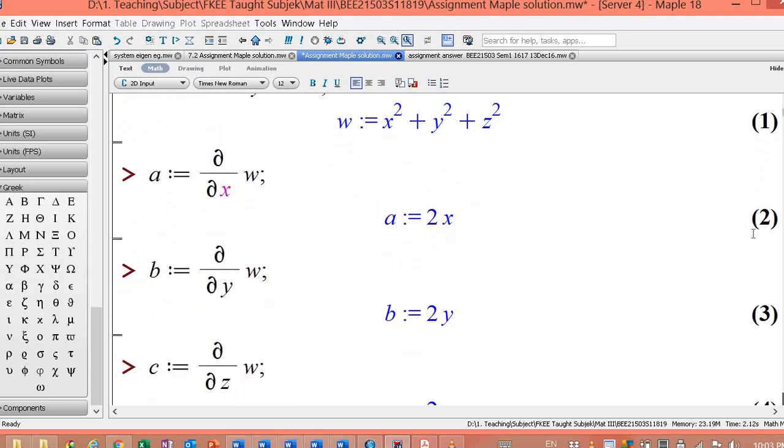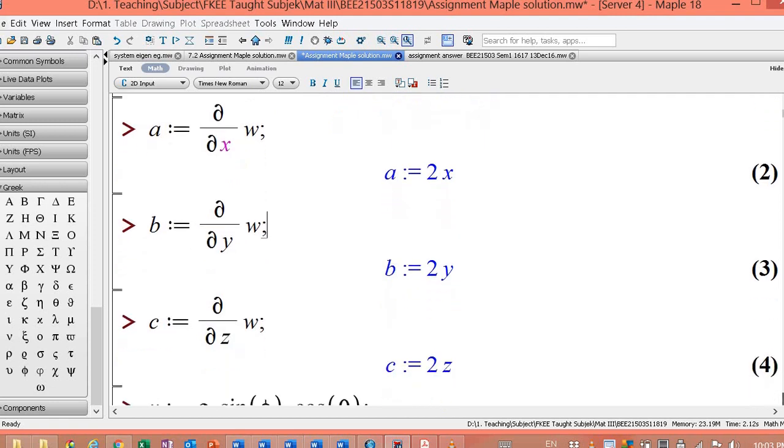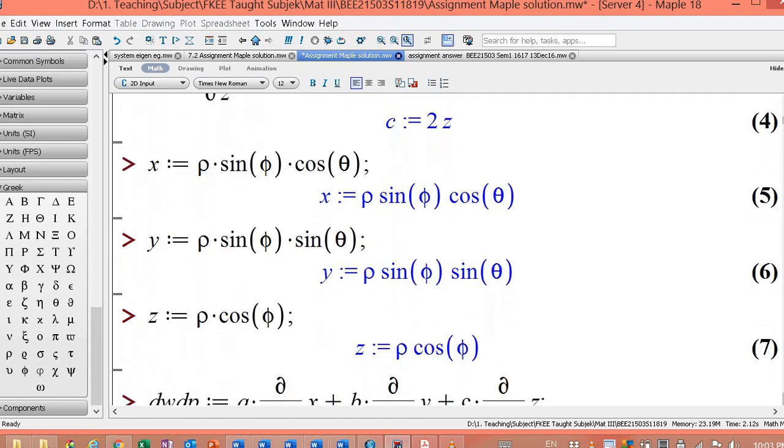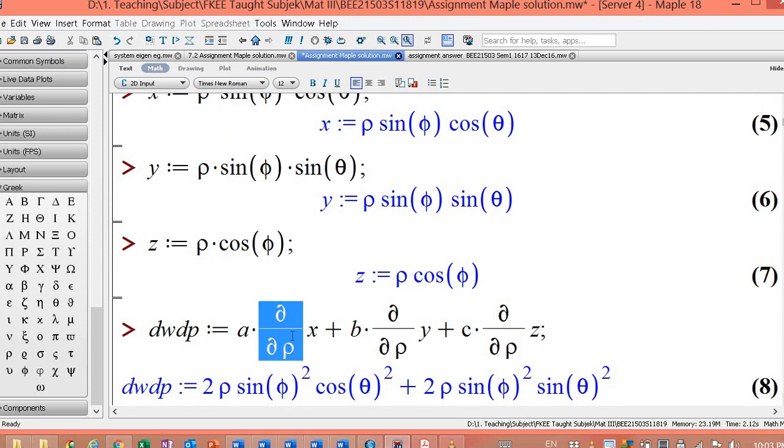The chain rule, ABC. If you want to let del x del rho as another variable, let's say this is d, this is e, this is f, also can. Let a multiply d plus b multiply e plus c multiply f also can.